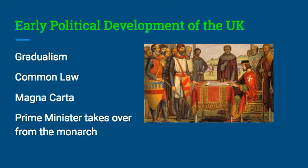Common law is an important term for understanding how politics developed in the UK. It is a system based on local customs and precedent rather than formal legal codes. Because of the UK's dependence on common law, it also makes sense why they have such a differently constructed judicial branch, which we'll talk about later in the unit.